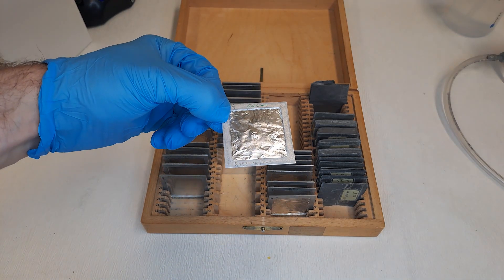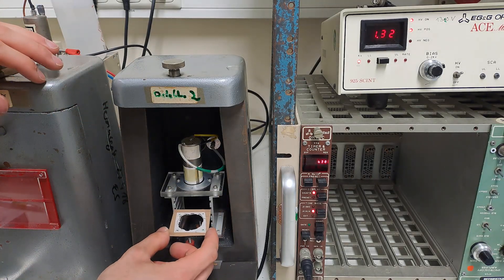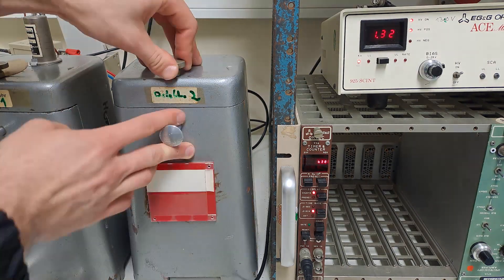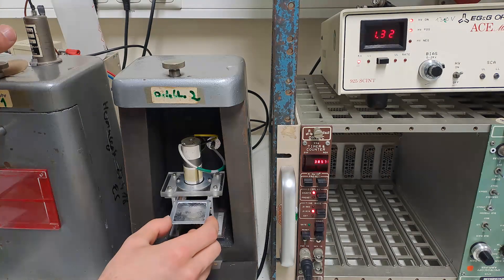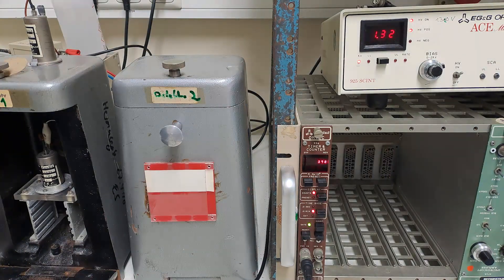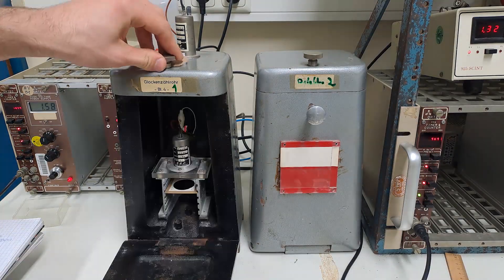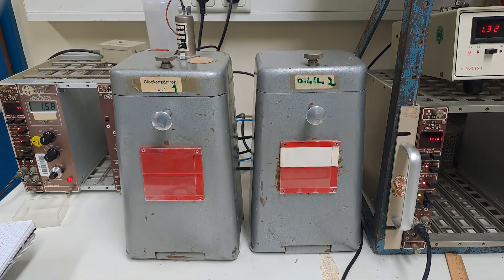Next, we'll determine the range of beta particles using aluminum foils of different thicknesses. The active site on the source is placed in the second slot and a new aluminum foil is added on top of it for each measurement, taken over two minutes. After adding the second foil, I realized I had another detector available, so I measured phosphorus-32 on the right and thallium-204 on the left simultaneously.